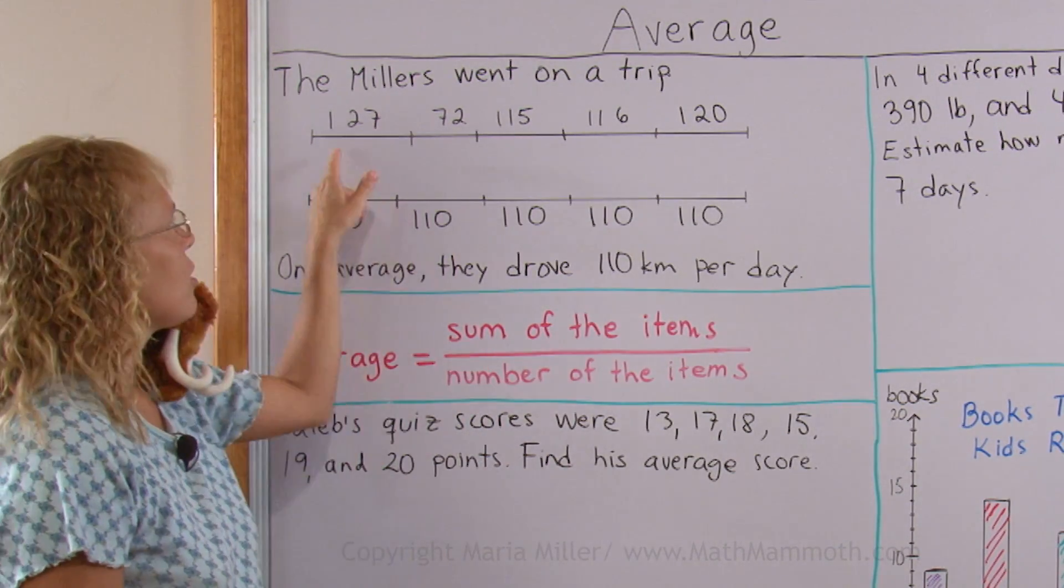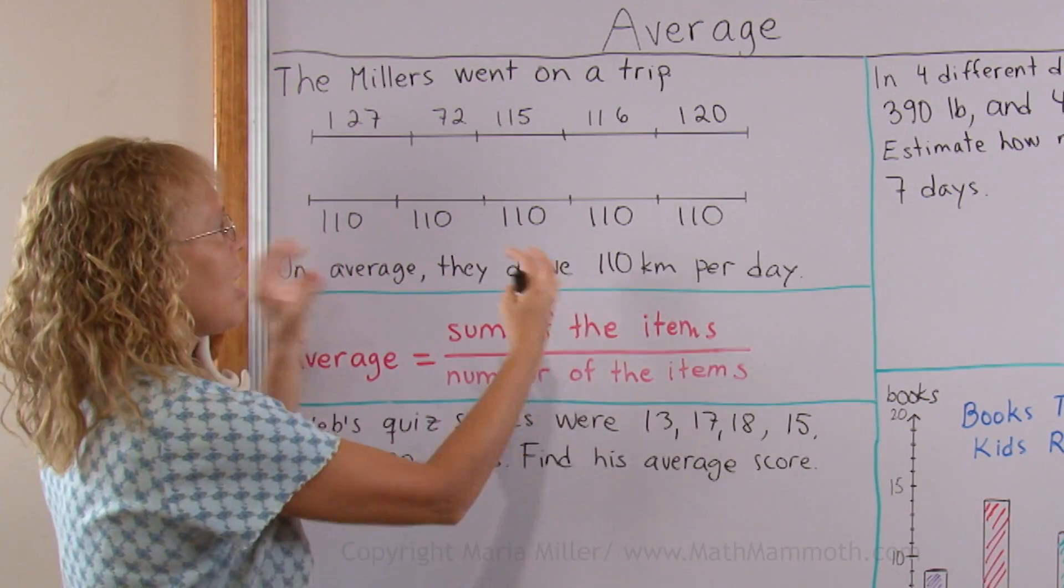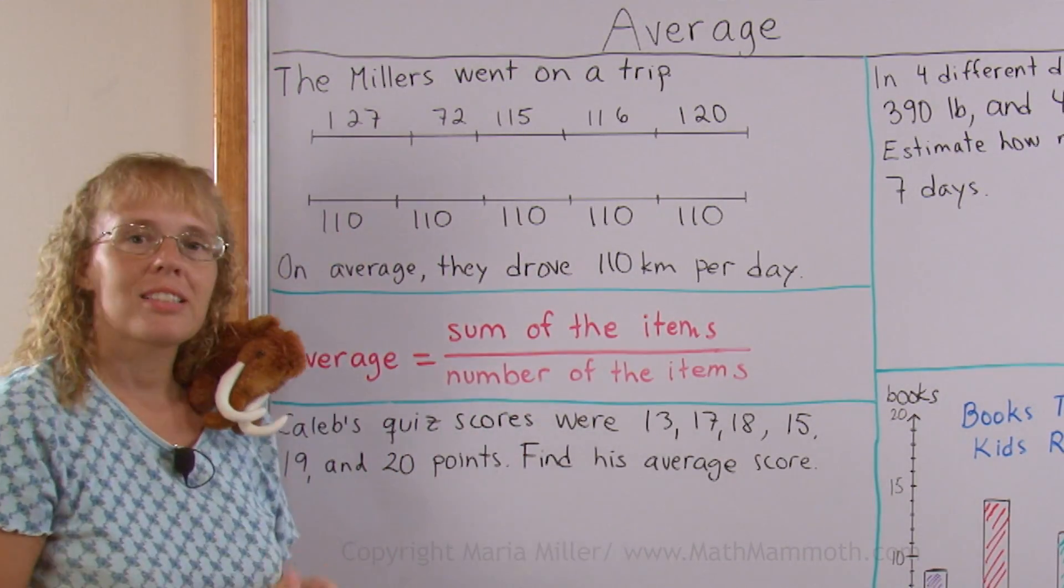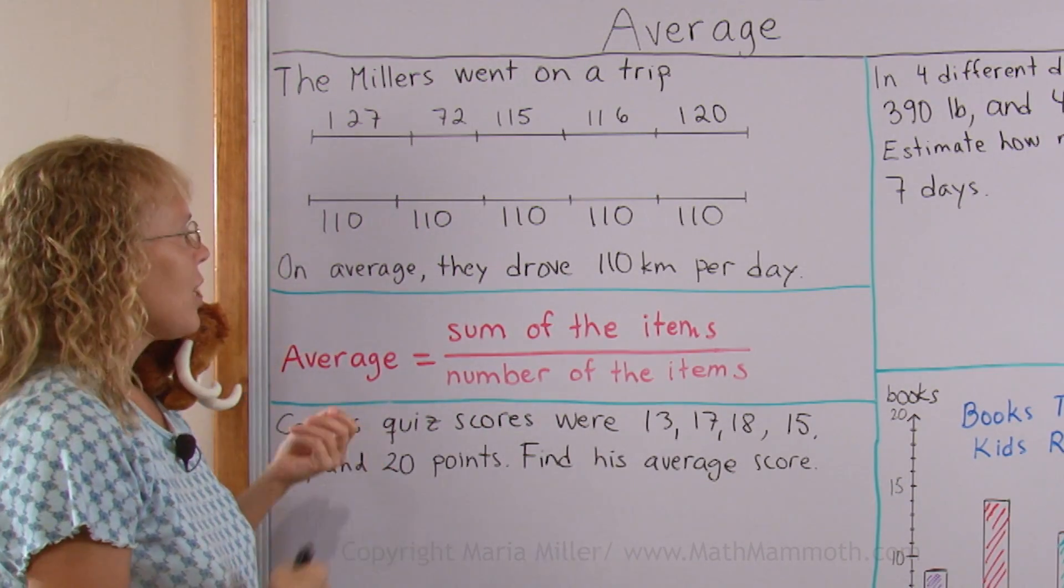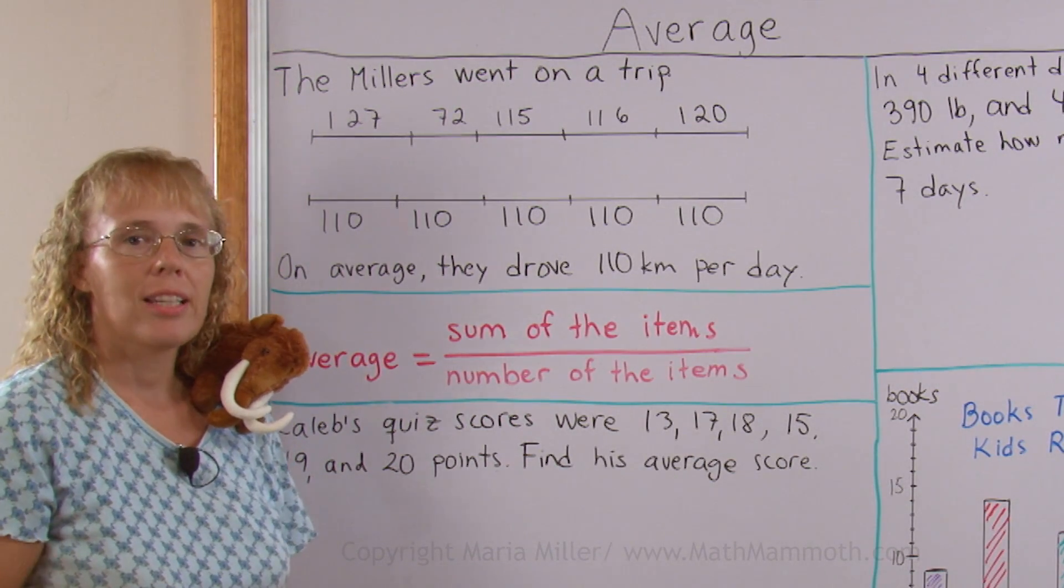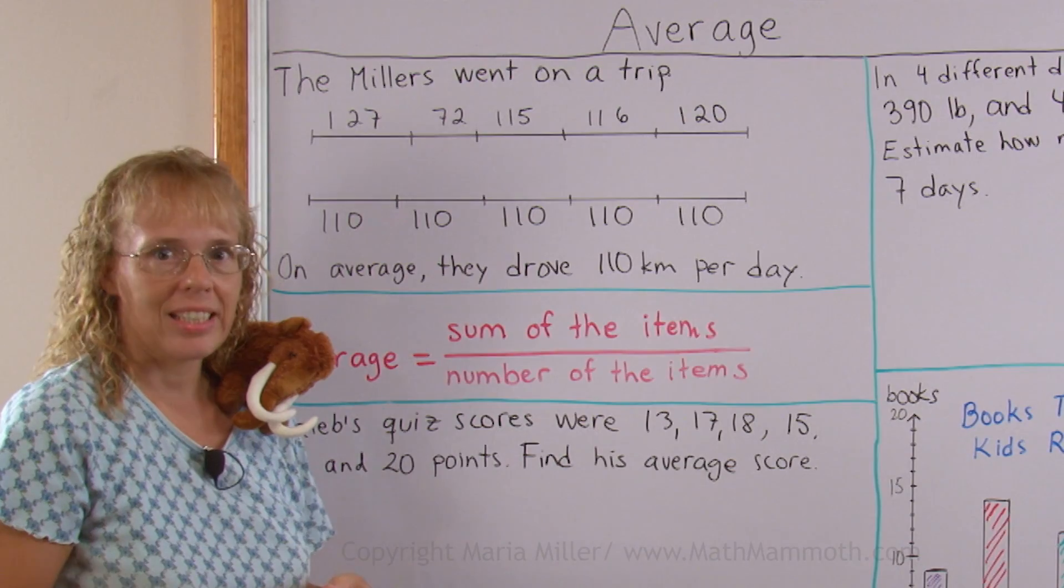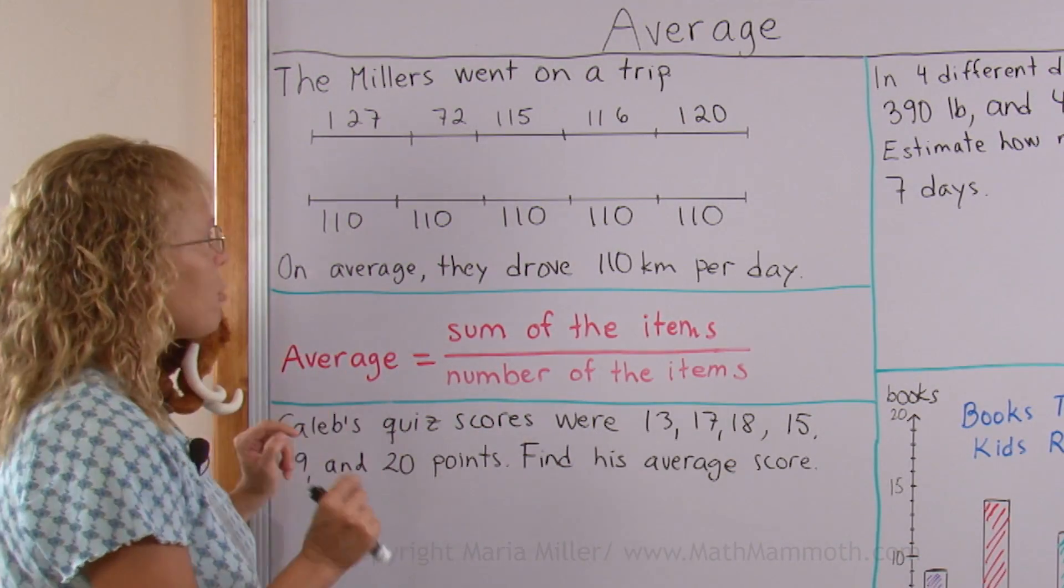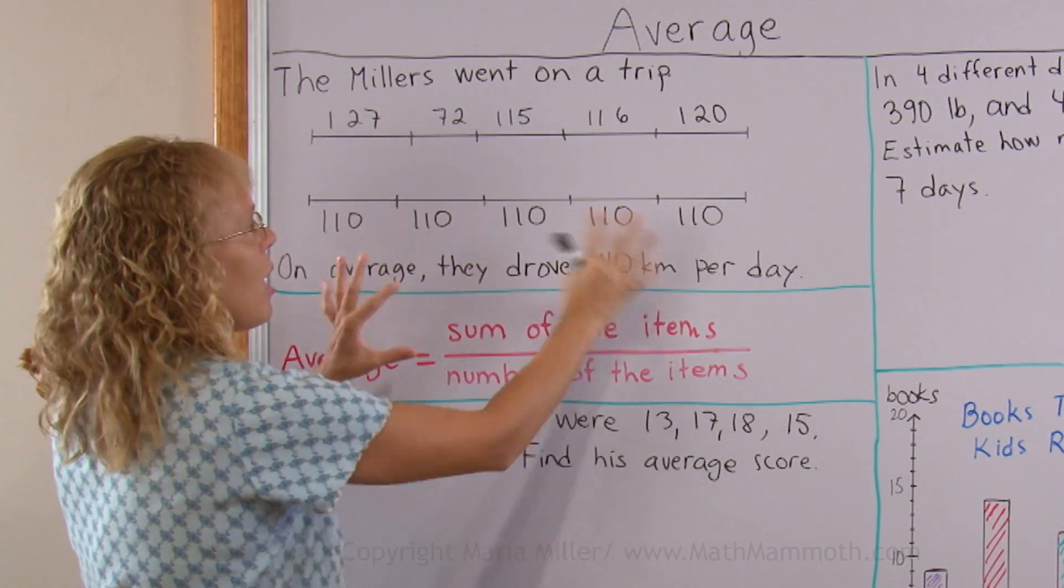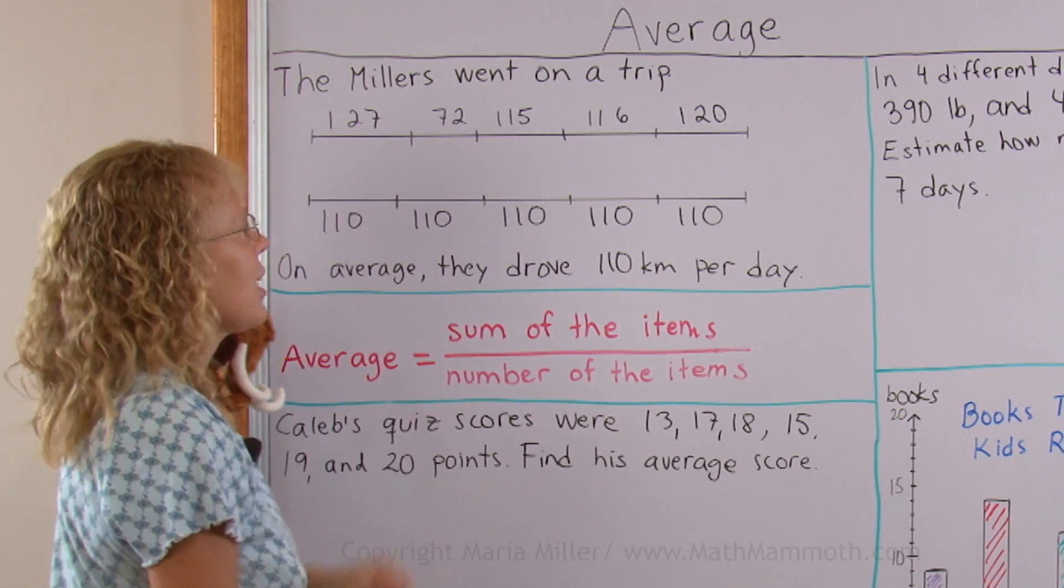In reality they didn't do that. They drove a different amount each day. But if we evened it out, evened those distances out, then it would come out to 110 kilometers each day. So that's why we say that on average they drove 110 kilometers each day. Or the average distance they drove was 110 kilometers. So that's the concept of average. It's basically a bunch of numbers and then we even them out so that it comes out to the same total. The total or the sum is the same.